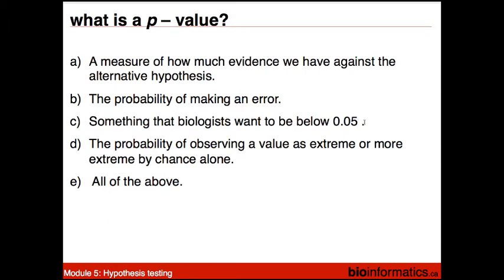Something that biologists want to be below 0.05 — where does that 0.05 come from? It's a cutoff about significance. A p-value is something we can calculate from our data — looking at the distribution and making some assumptions, we can calculate the probability that a particular observation was part of a population that gave rise to that distribution. We cannot calculate significance. That's because it's not a meaningful mathematical concept — significance is not a mathematical concept, it's a cultural concept.